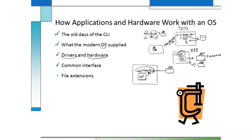One of the things you're going to see in our discussion is what file extensions mean to us, and this is part of how applications and hardware work together with an operating system. If I wanted to open a file and I was doing the directory command and saw a list of files, in order to open a file I had to first open a program and then reference the file I wanted to open.